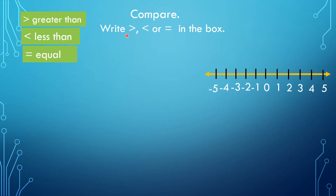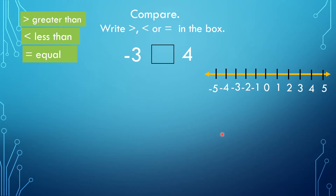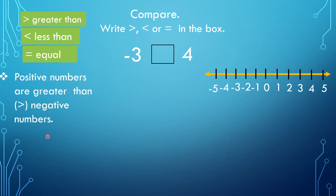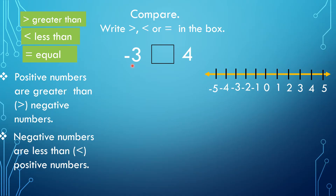Let's compare — write greater than, less than, or equal in the box. We have negative 3 and 4. Using the number line, we know that the number on the right side is always greater than the number on the left side. Positive numbers are greater than negative numbers, so negative 3 is less than positive 4.